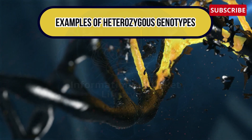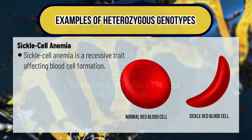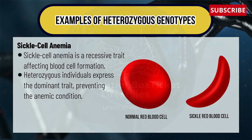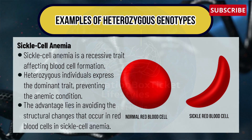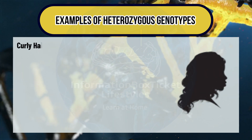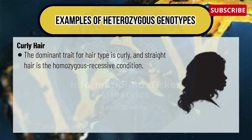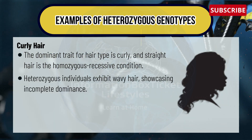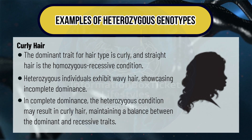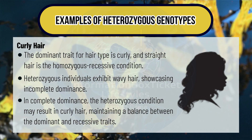Let's see the examples of heterozygous genotypes. Sickle cell anemia is a recessive trait affecting blood cell formation; heterozygous individuals express the dominant trait, preventing the anemic condition and avoiding the structural changes that occur in red blood cells. Next, curly hair: the dominant trait for hair type is curly, and straight hair is the homozygous recessive condition. Heterozygous individuals exhibit wavy hair, showcasing incomplete dominance. In complete dominance, the heterozygous condition may result in curly hair, maintaining a balance between dominant and recessive traits.